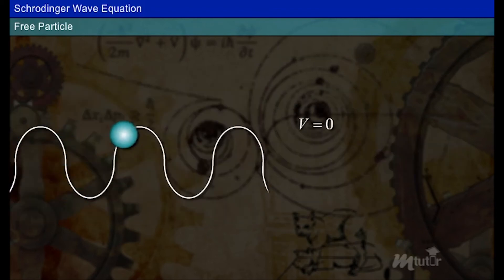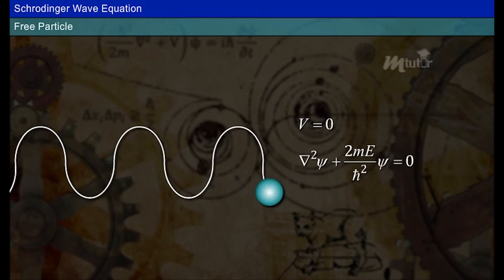Let's apply Schrödinger equation for a free particle. V is equal to zero. The equation is as shown.